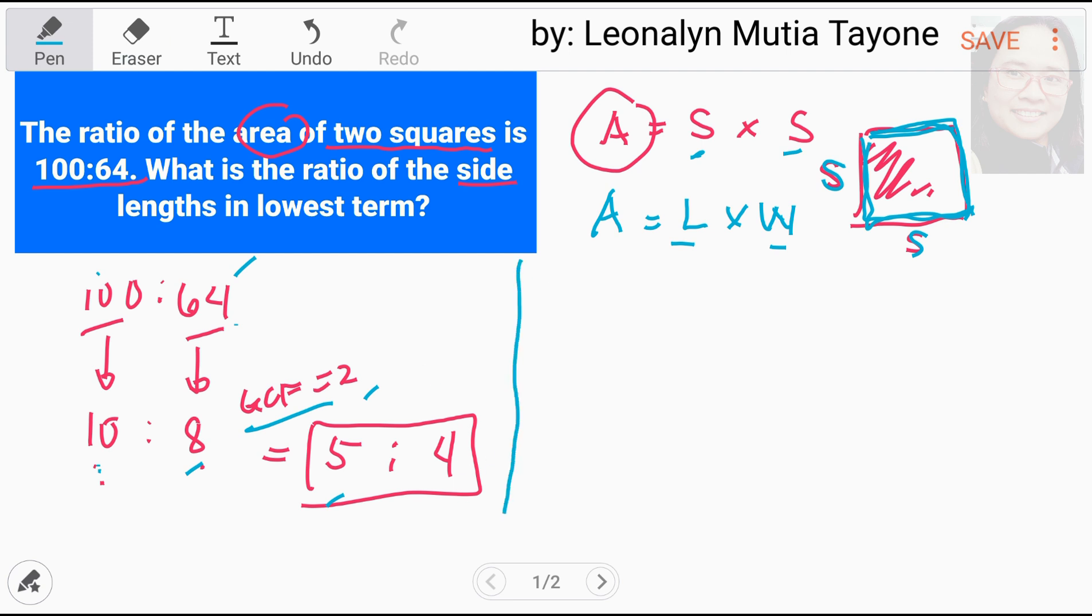Ngayon, dito tayo sa solution number 2. Pariho lang. 100 is to 64. Ang gagawin natin ay ito yung i-list natin. Again, para ma-list siya, hanapan natin ang greatest common factor, which is 4. So, i-divide natin ang 4. Divided by 4 equals 25. 64 divided by 4 equals 16. So, 25 is to 16. Yan, mga area pa yan.